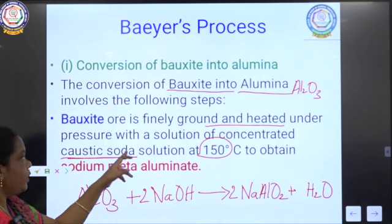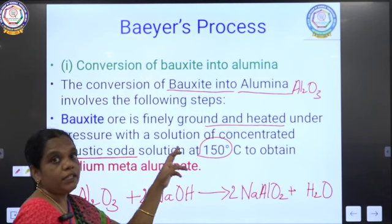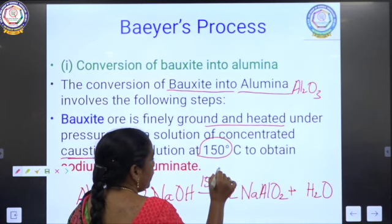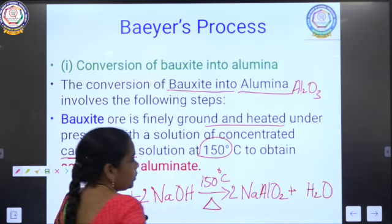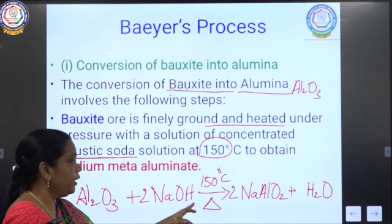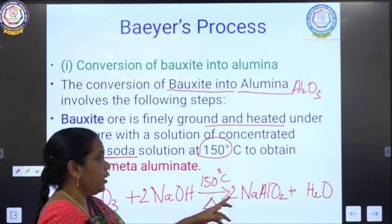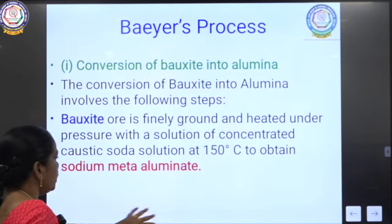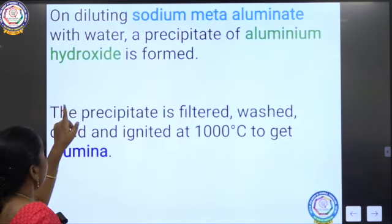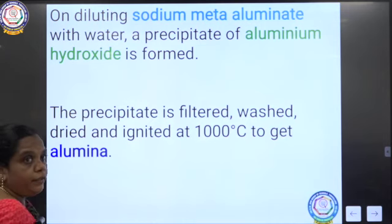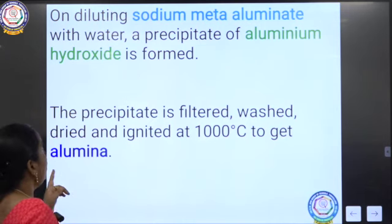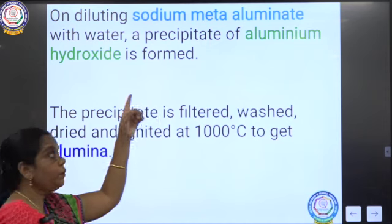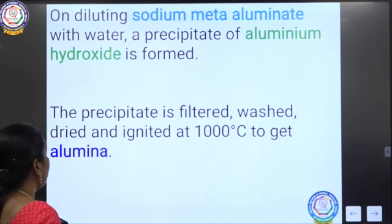The sodium metaaluminate is then treated with water to precipitate aluminium hydroxide. The sodium metaaluminate (NaAlO₂) reacts with water to form aluminium hydroxide (Al(OH)₃) and sodium hydroxide (NaOH).